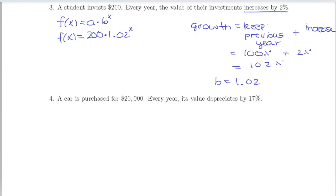Now our decrease in value is going to be very similar. Again, we're going to use our same base function, f(x) equals a times b to the x. All of these word problems are going to use that same form. We can see that the initial value of the car is $26,000, so we're going to fill that in for a.